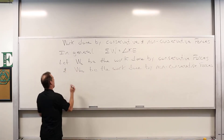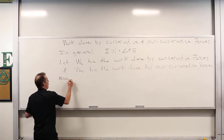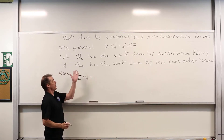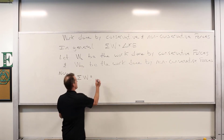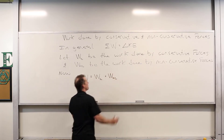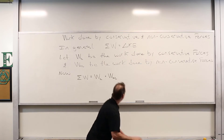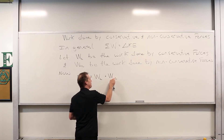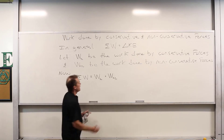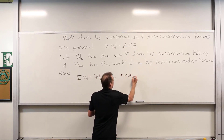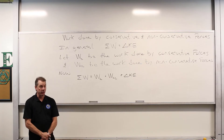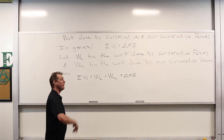We can generalize this. If we have both non-conservative and conservative forces acting, the net work done can be written as the sum of the work done by the conservative forces and the work done by the non-conservative forces — pretty simple. So we write W_C plus W_NC. And we know that in general the net work done produces a change in kinetic energy, so this is what sums up to produce delta KE. There's something nice about work done by conservative forces: they can be recast in terms of changes in potential energy.